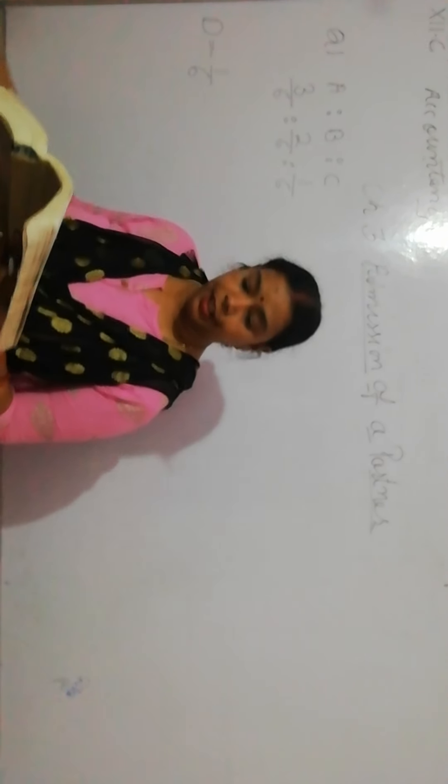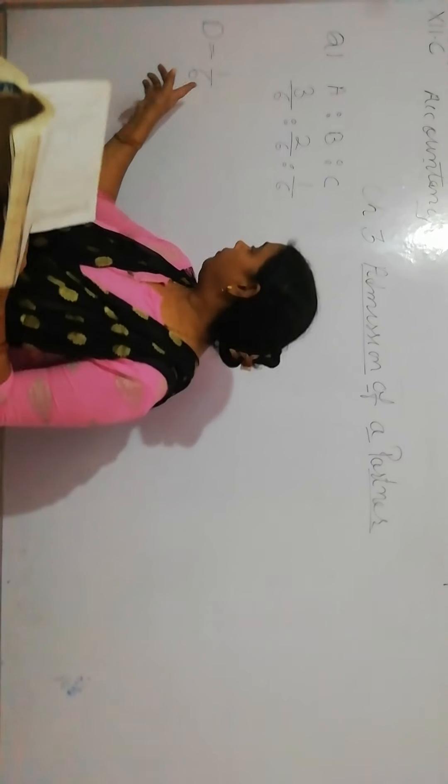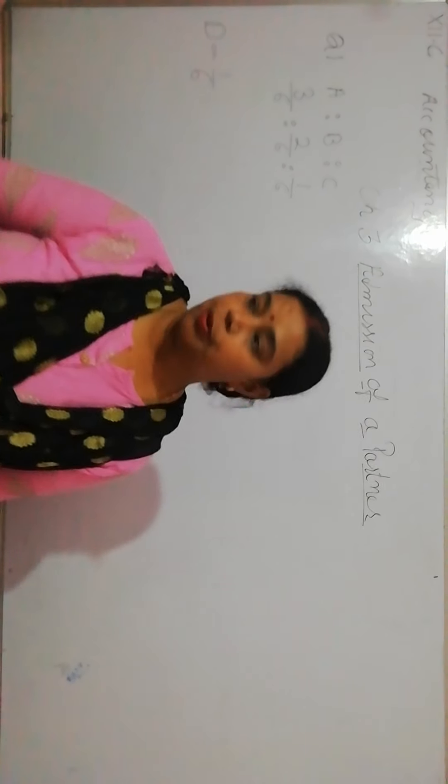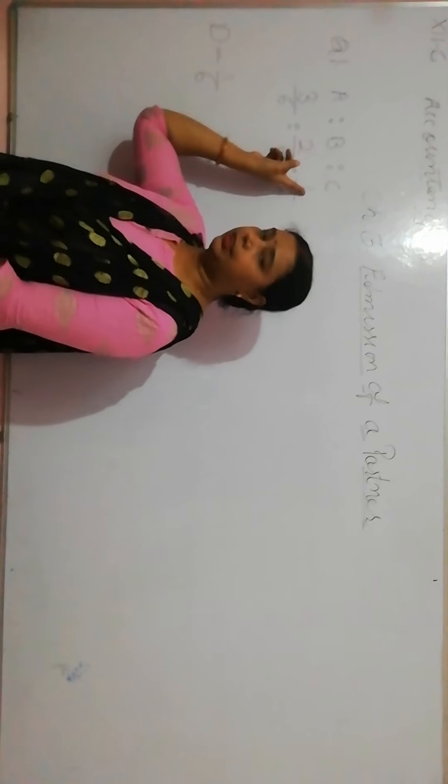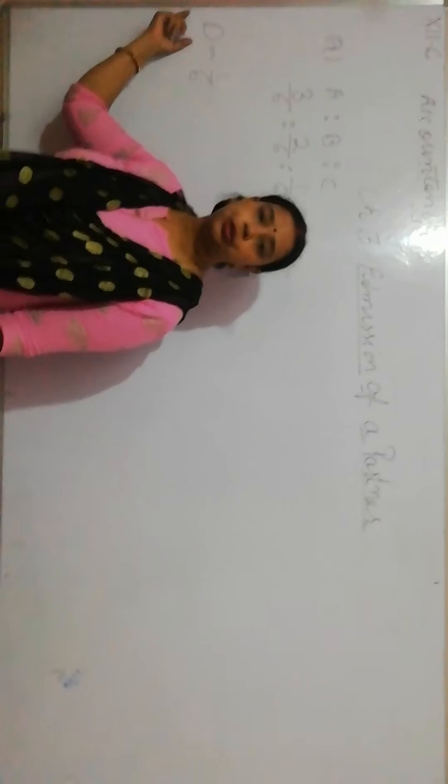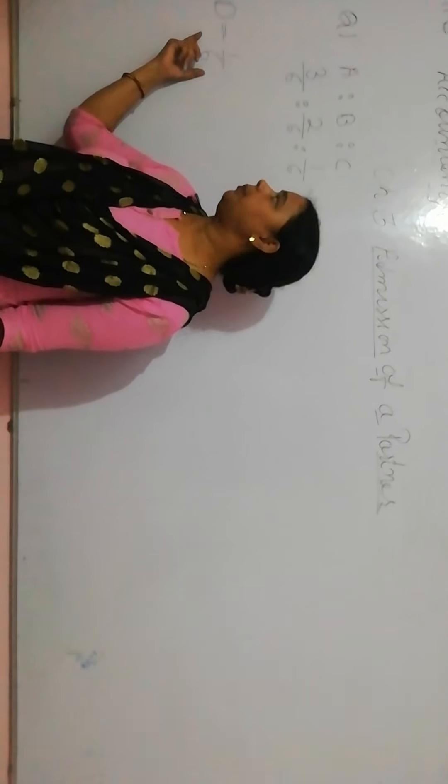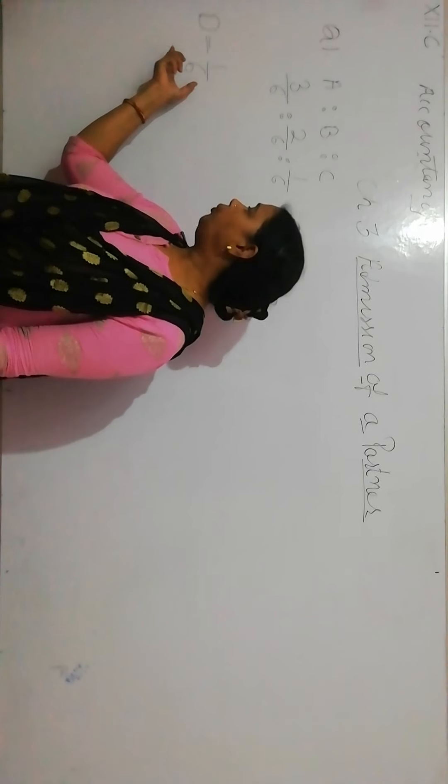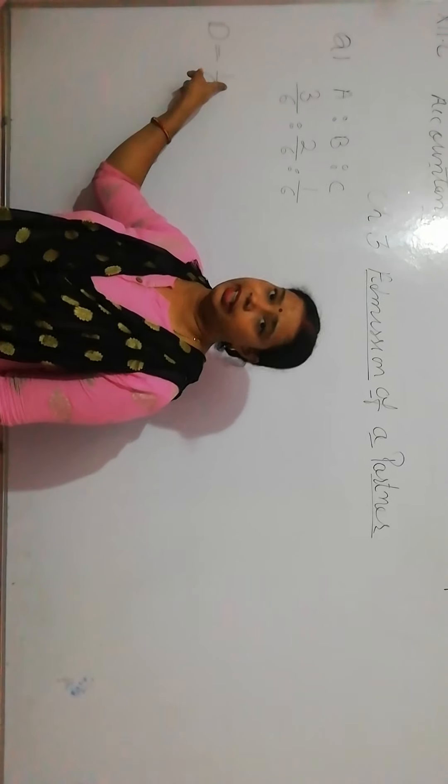D ka admission hua hai in the firm, a new partner with a 1 by 6 share. Now calculate the new profit sharing ratio. What the question is saying? Question is saying that ABC are the partners with a profit sharing ratio 3 raise to 2 raise to 1. Now D wants to admit in our partnership and D wants 1 by 6. That means out of 6, 1 share D wants.